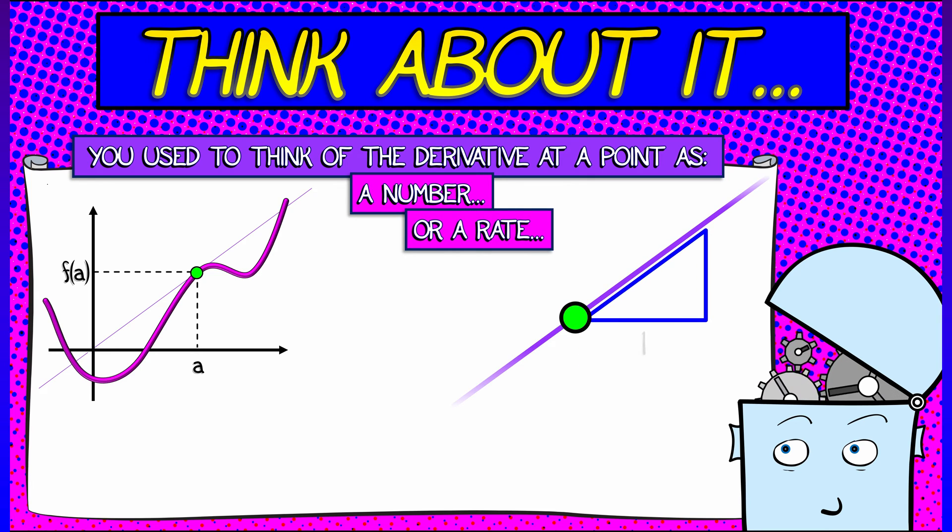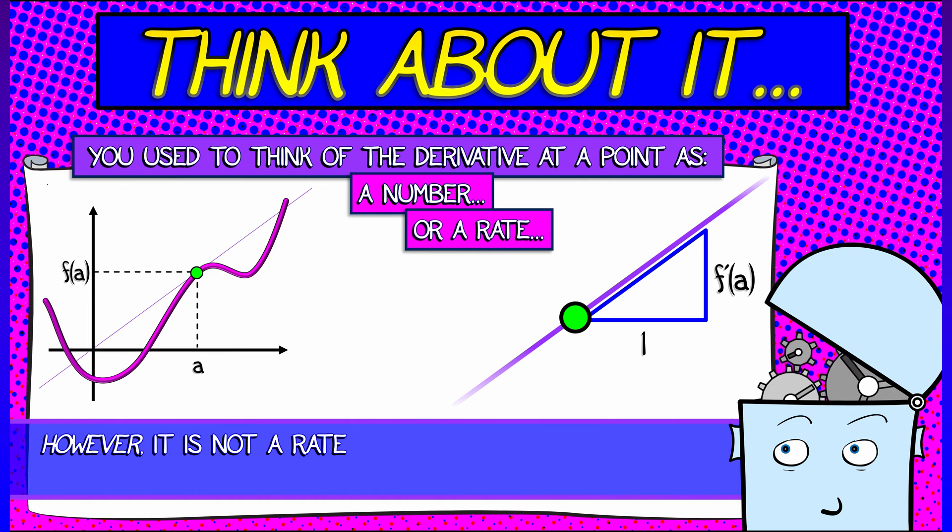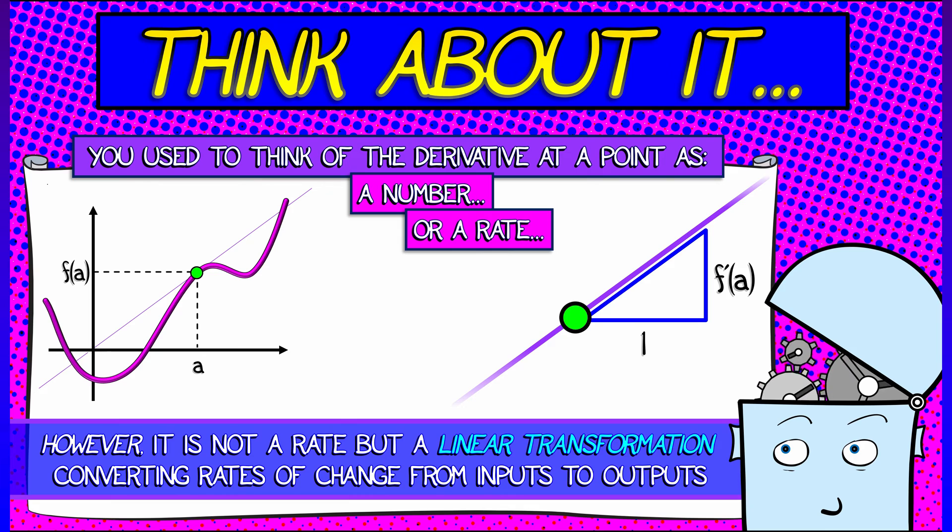Okay, what does that have to do with what we're learning now? Well, in reality, the derivative all along was a linear transformation, taking you from the rate of change of the input to the rate of change of the output.